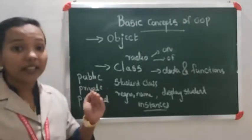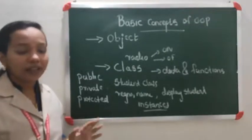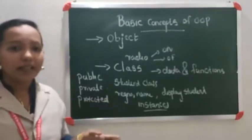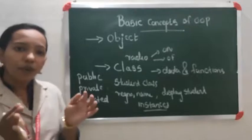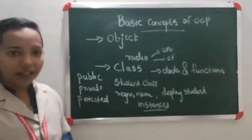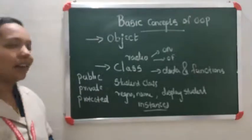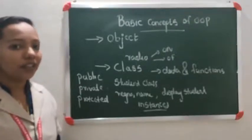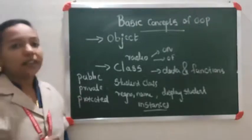Having three access specifiers — public, private, and protected — improves the security level of that programming concept. Class and structure are both used for grouping data, but class provides three access specifiers which are not present in structure. That is the speciality of class. So those are the first two basic concepts of OOP: first is object and second is class.